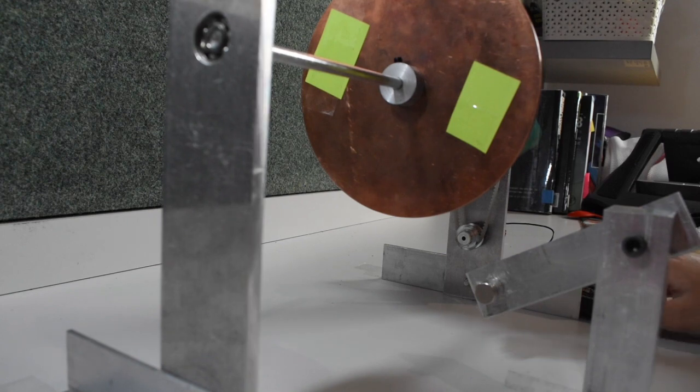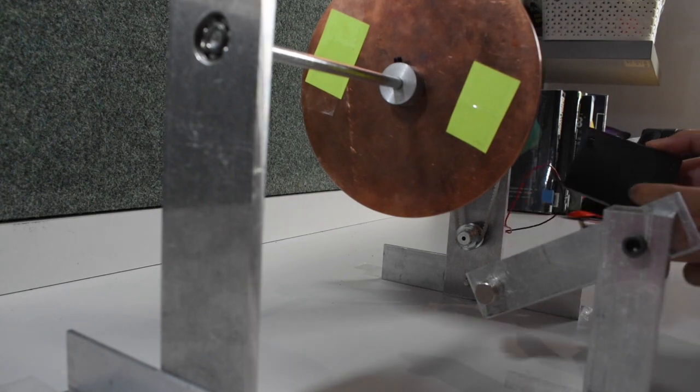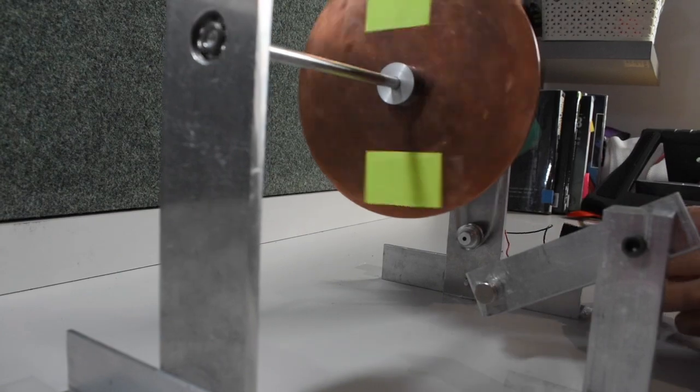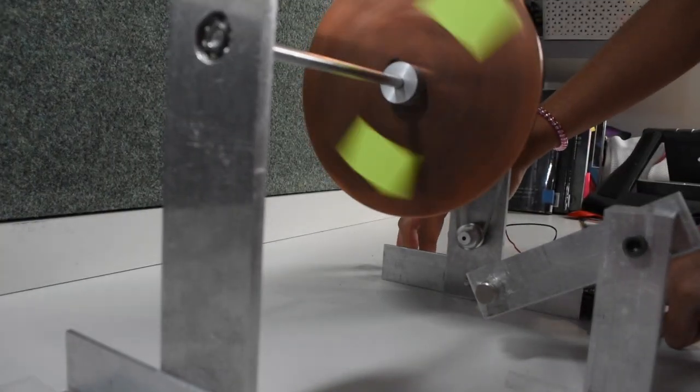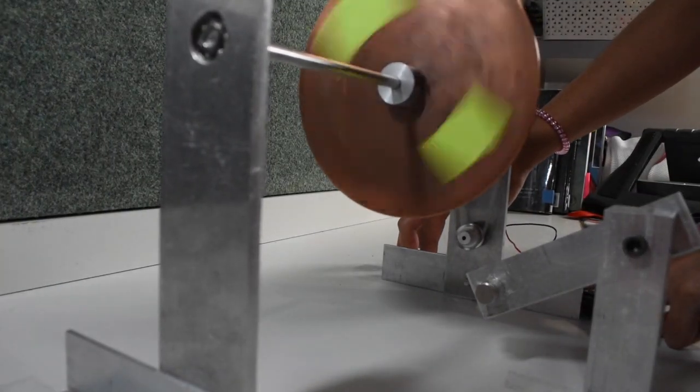Two pieces of green paper are used to show how fast the disc is moving. After the power is switched on the disc starts to rotate and reach a high velocity.